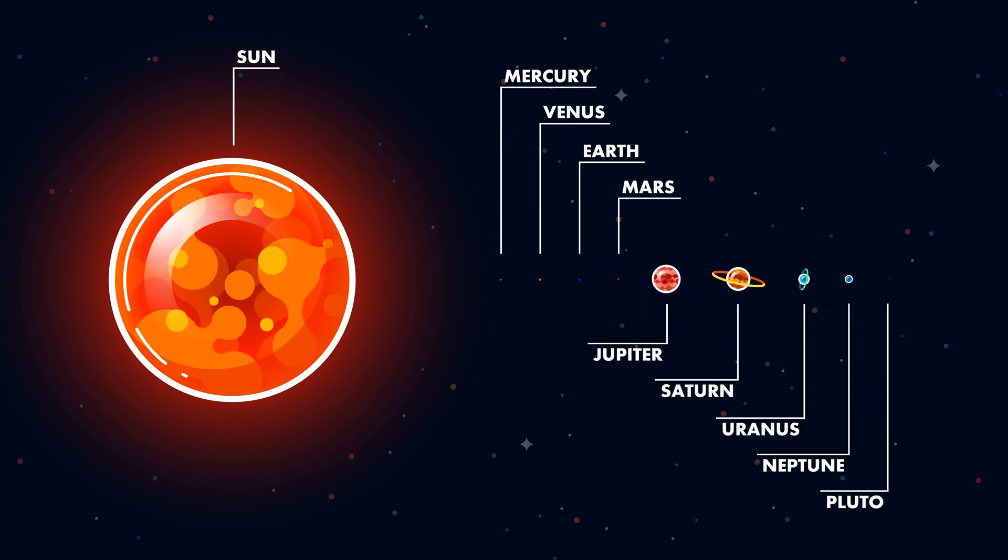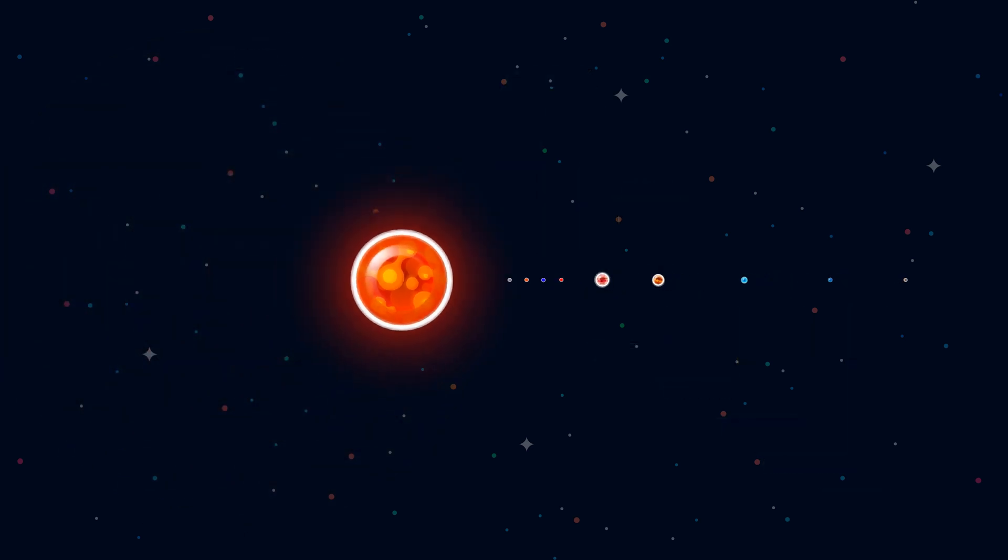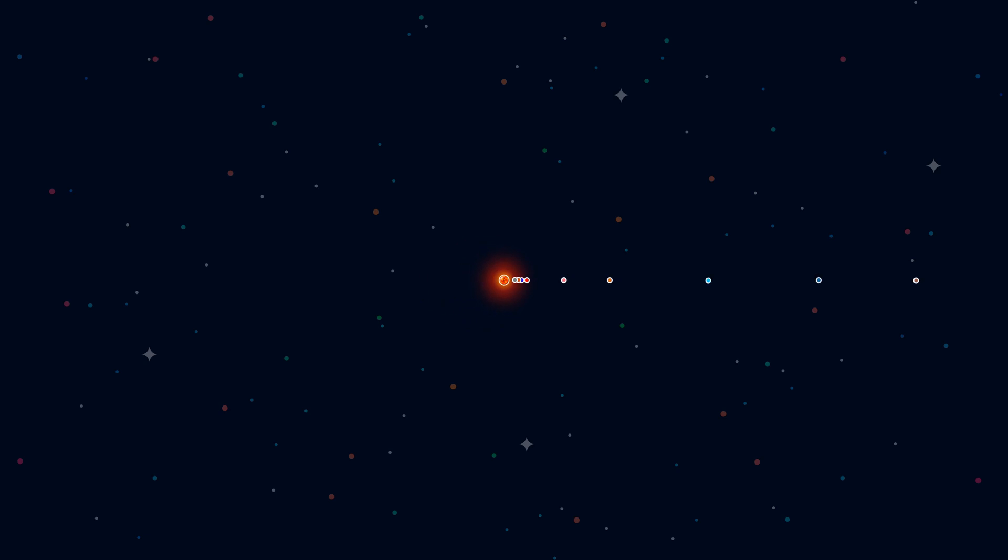The third dot is where you live. Even though this picture represents the scale of the planets, the distance is still not correct. Let's have a look at the true scale of our solar system.